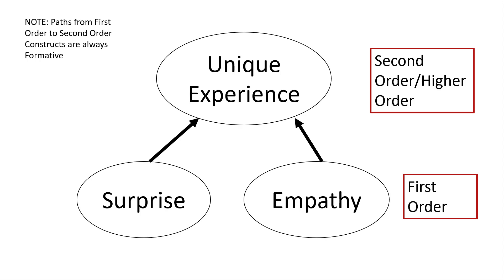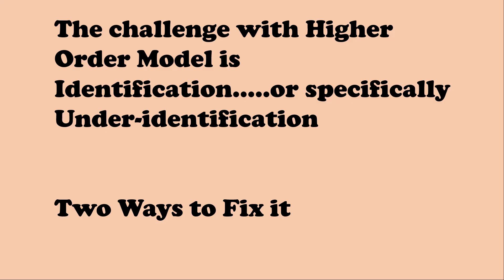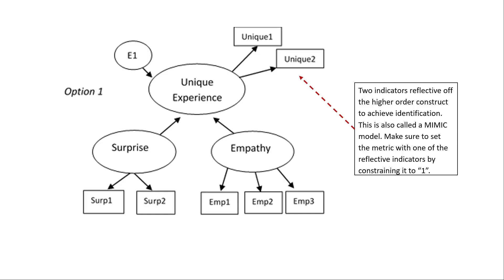Some unique aspects you have to deal with in a higher-order model involve identification — specifically under-identification. Those first-order paths to the higher-order construct can create under-identified aspects in terms of degrees of freedom, which is problematic. There are really two ways to fix this — kind of a workaround.